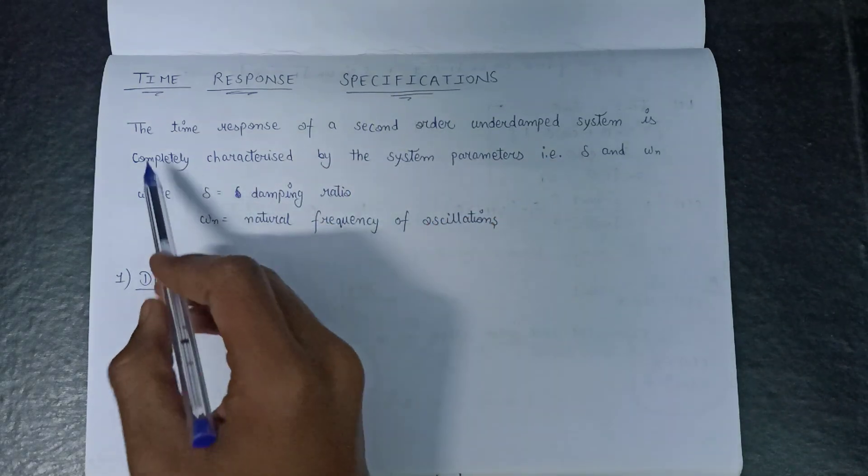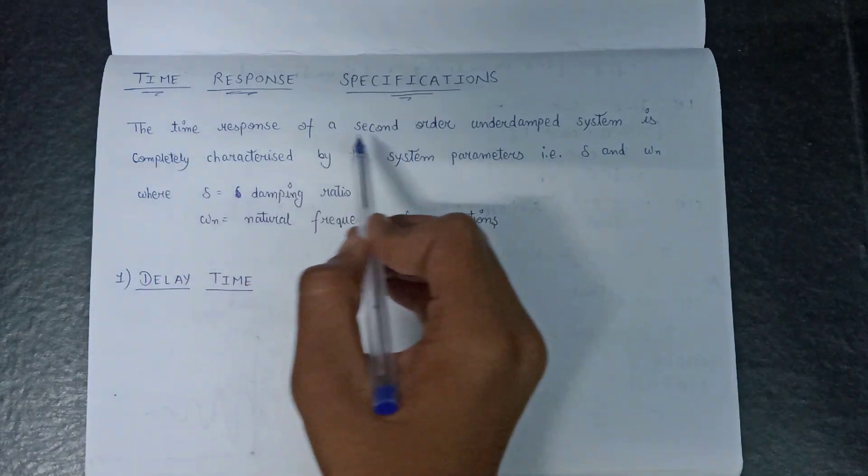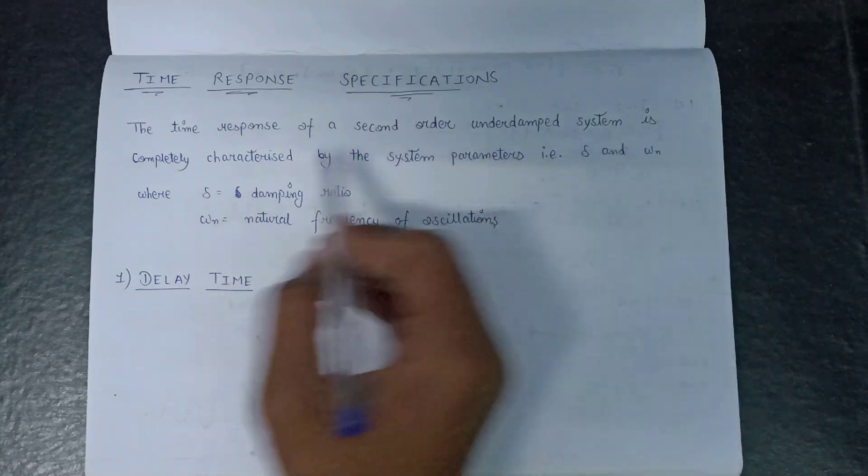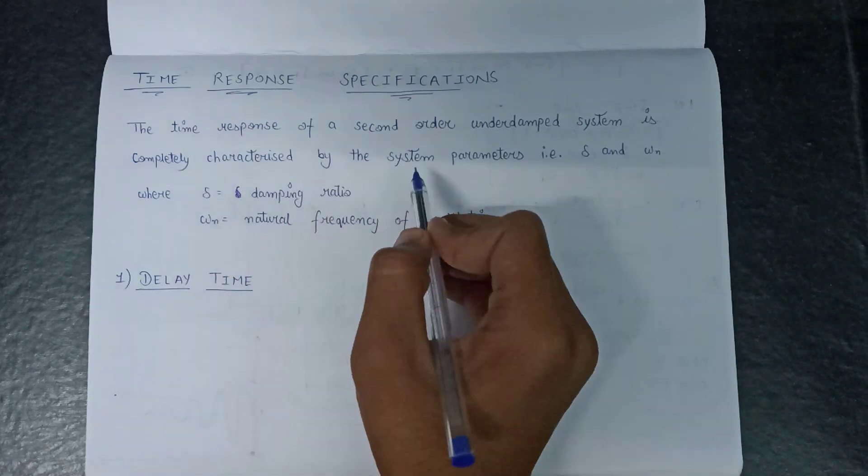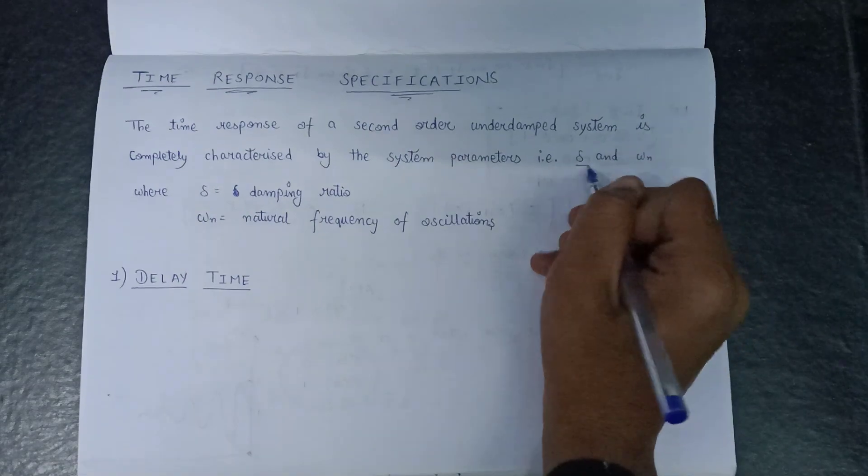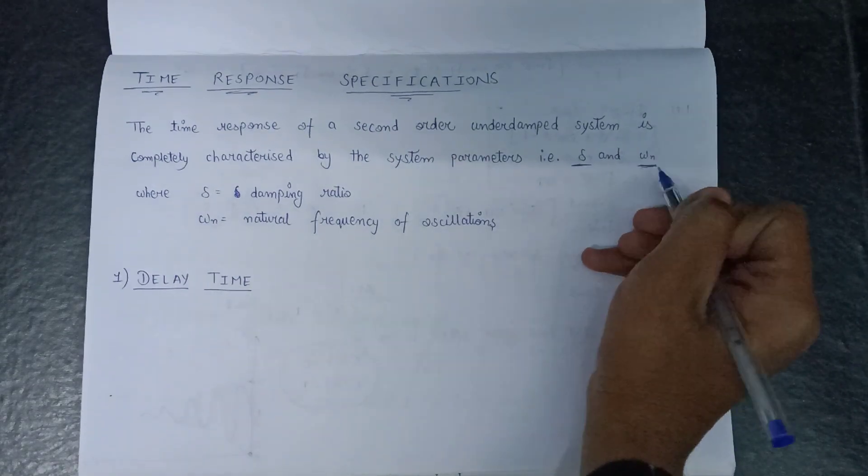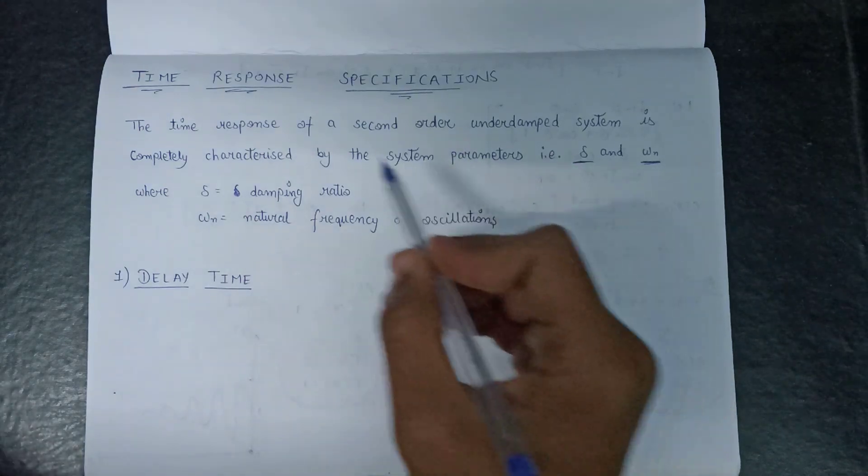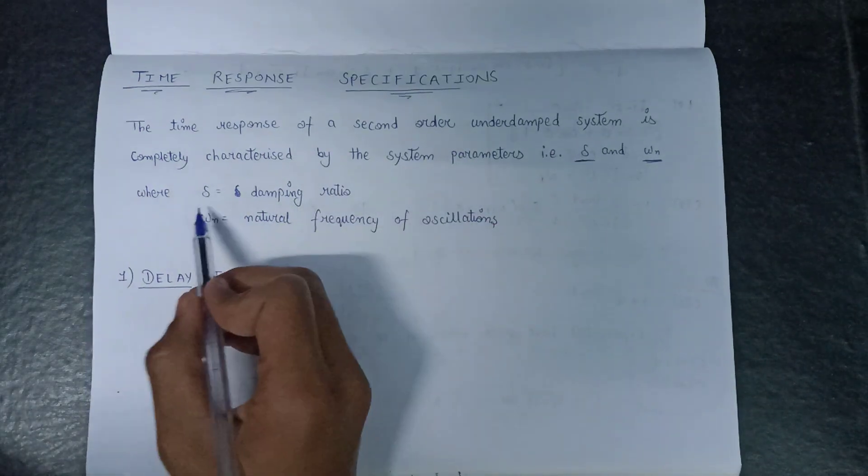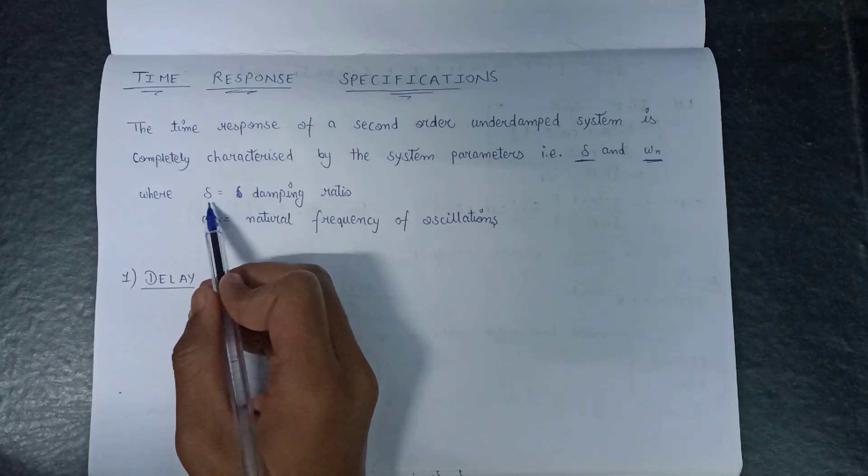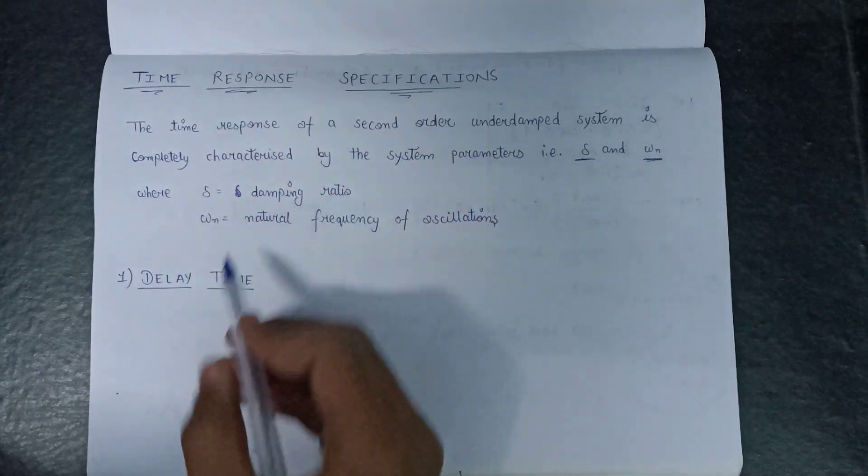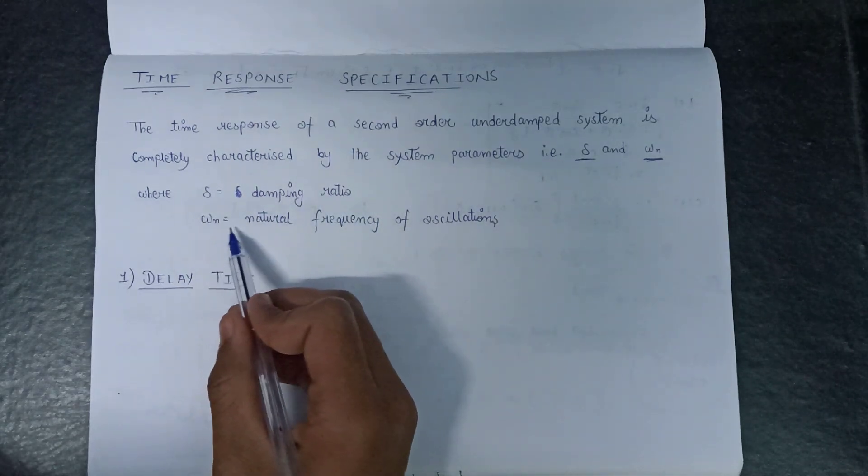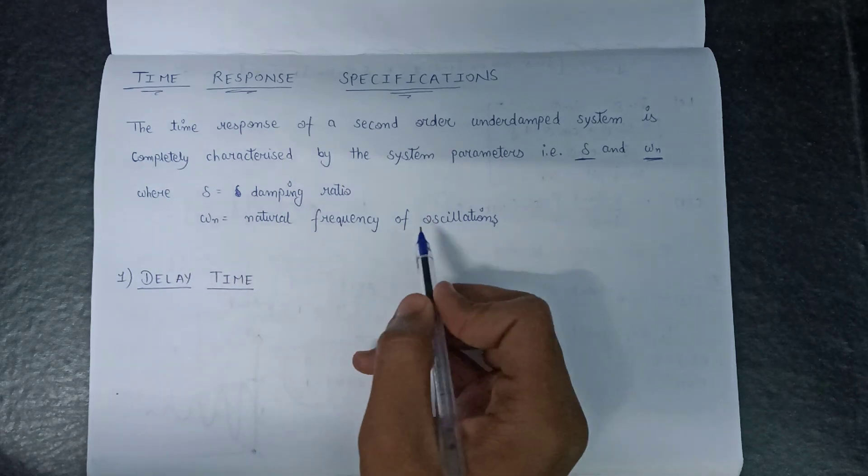So what does it mean? The time response of a second order underdamped system is completely characterized by the system parameters, that is del and omega n, where del is the damping ratio and omega n is the natural frequency of oscillations.